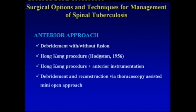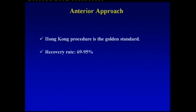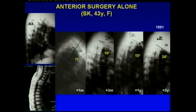Hong Kong procedure via thoracoscopic-assisted mini approach is also an option. The Hong Kong procedure was described by Dr. Haxton in 1956, with a recovery rate between 69% to 95%. In our series, 20 years ago, we performed the Hong Kong procedure on a 43-year-old man with upper thoracic TB.